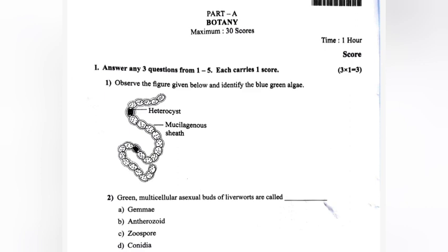Question 2: Green multicellular asexual parts of liverworts are called ___.